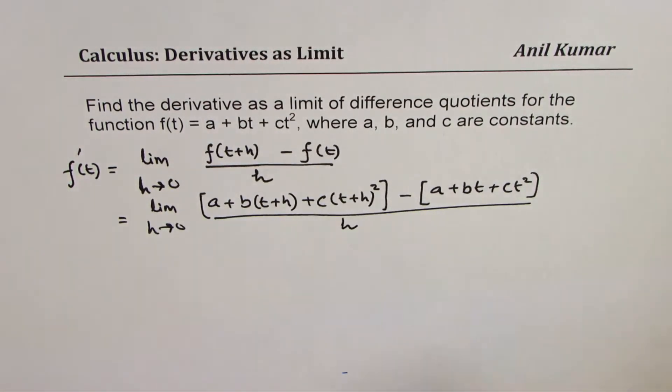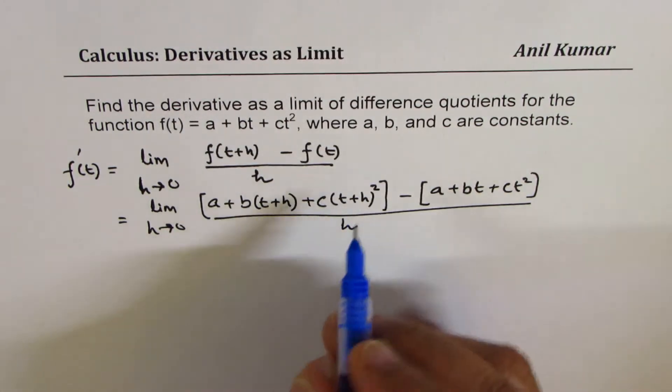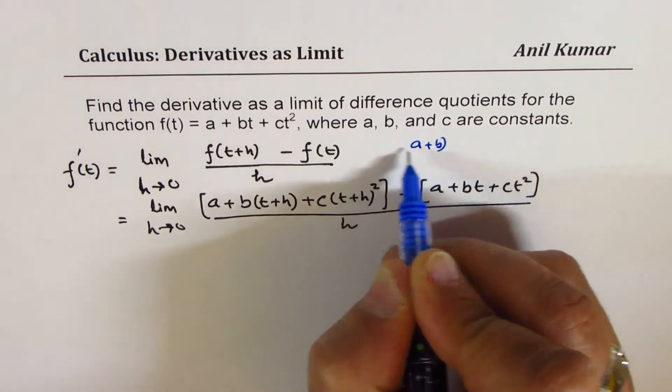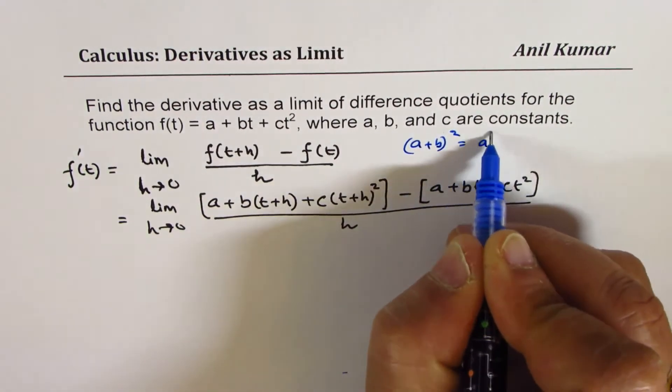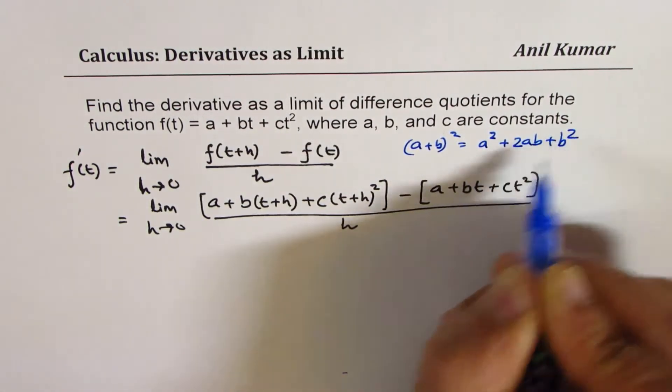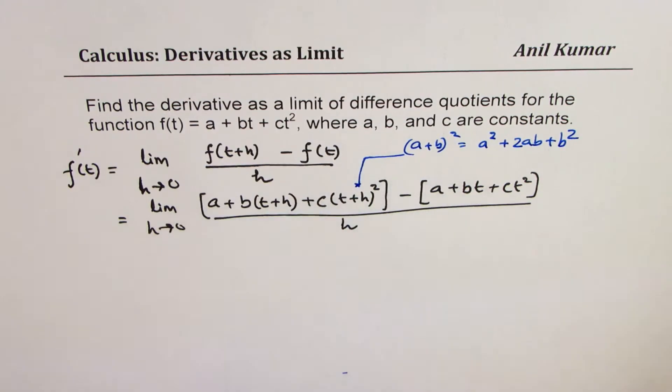Now, to expand, we will apply the distributive property. I hope you remember what is a plus b whole square. Let me write down here, a plus b whole square is a square plus 2ab plus b square. We are going to use this formula to expand the term given.